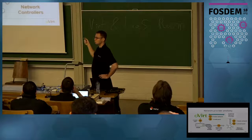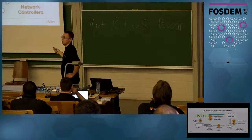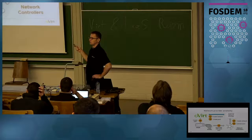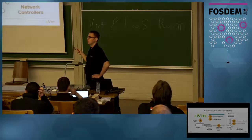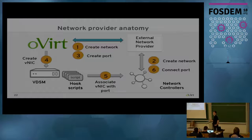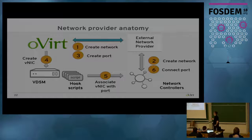That request would be sent using the OpenStack Network API to the external network provider. The external network provider would create the network and talk to the network controllers to create the network in our network infrastructure. As the second operation, we would create the port — the vNIC on our VM — and tell oVirt that we want this vNIC connected to a specific network. oVirt engine would then create a port on the external network provider, which usually just creates a mapping between the logical port and the not-yet-existing vNIC in the system, so probably no interaction with the network infrastructure yet.